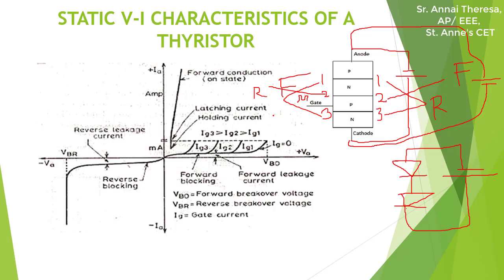In forward conduction mode, the thyristor acts like a closed switch. The voltage drop will be in the order of 1 to 2 millivolts. So we have seen the static VI characteristics, and there are two important terms we must know.